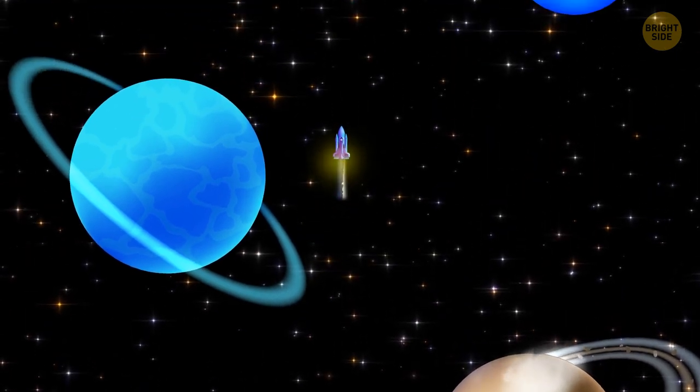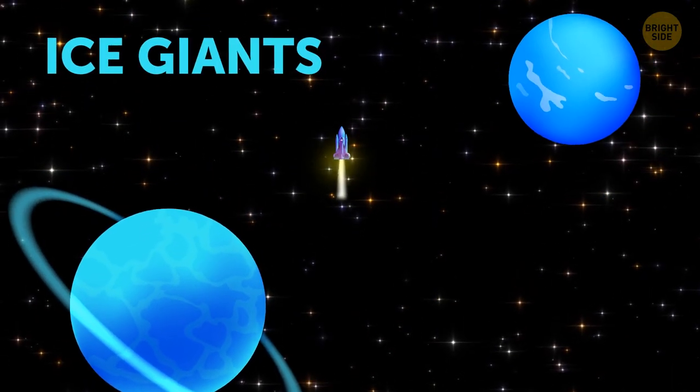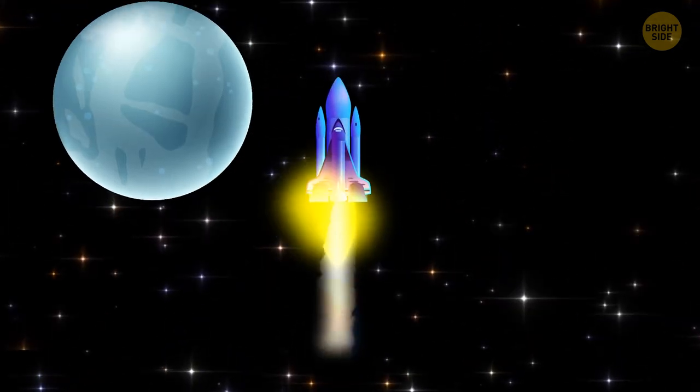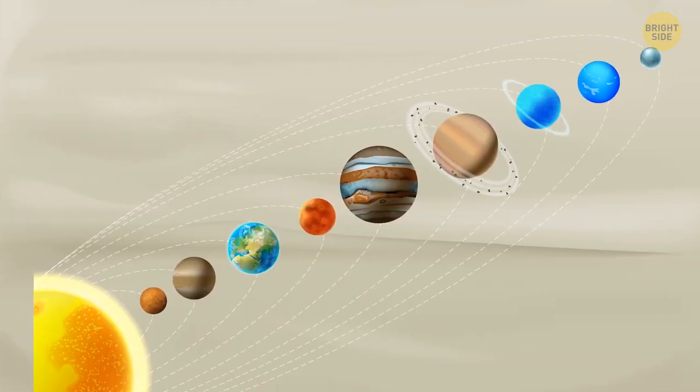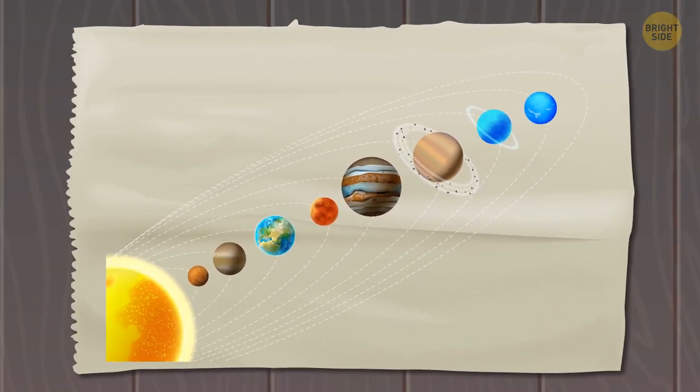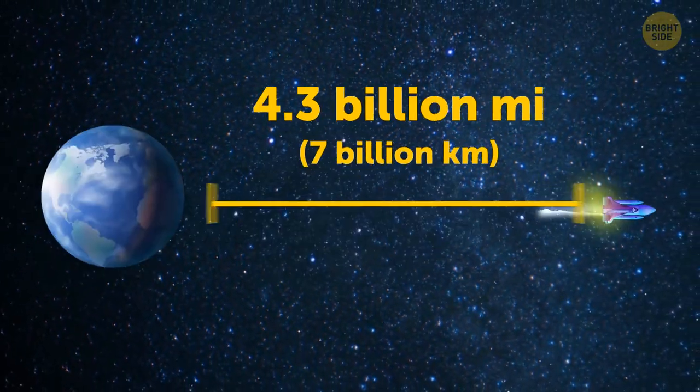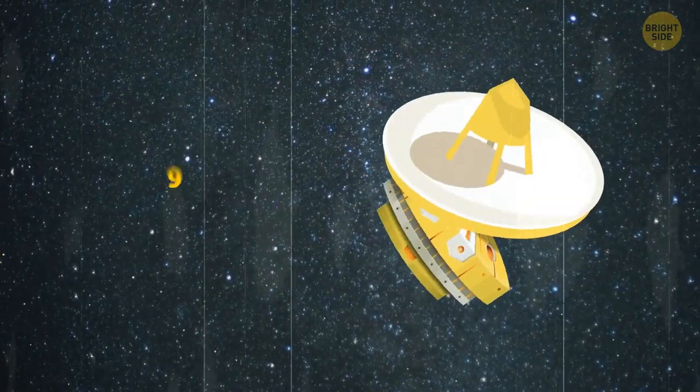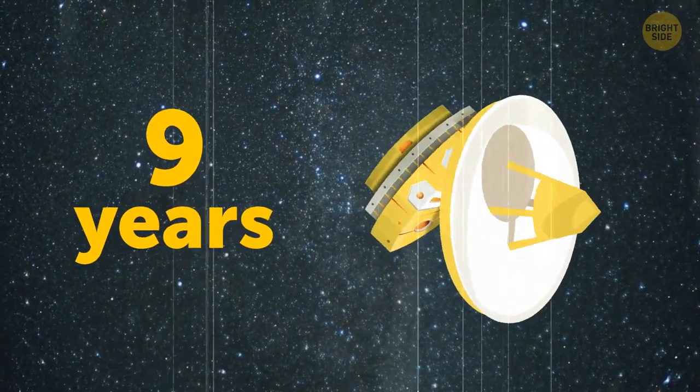Then, we travel by Uranus and Neptune. They're called ice giants. And at the very edge of the solar system, we see Pluto. It was once considered a full-fledged planet, but now it's not even on the list. After that, we're 4.3 billion miles away from our home. It took the New Horizons space probe about nine years to get here.